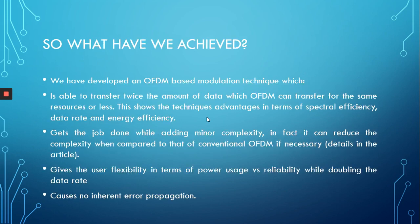So, what have we achieved? We've achieved something important — we brought an idea to life. What we're doing is adding a third dimension to carry data, which is the power levels of the subcarriers of the OFDM symbol. In our case we only chose two power levels, but these can be changed to build your own system. All in all, we achieved an OFDM-based modulation technique able to transfer twice the data that OFDM can transfer for the same or fewer resources, demonstrating advantages in spectral efficiency, data rate, and energy efficiency.